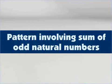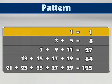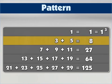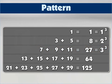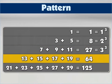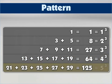Now let's look at an interesting pattern involving some odd natural numbers. The first odd number is the cube of 1. The sum of next two consecutive odd numbers is 8 or cube of 2. The sum of next three consecutive odd numbers is 27 or cube of 3. The sum of next four consecutive odd numbers is 64 or cube of 4, and the pattern goes on.